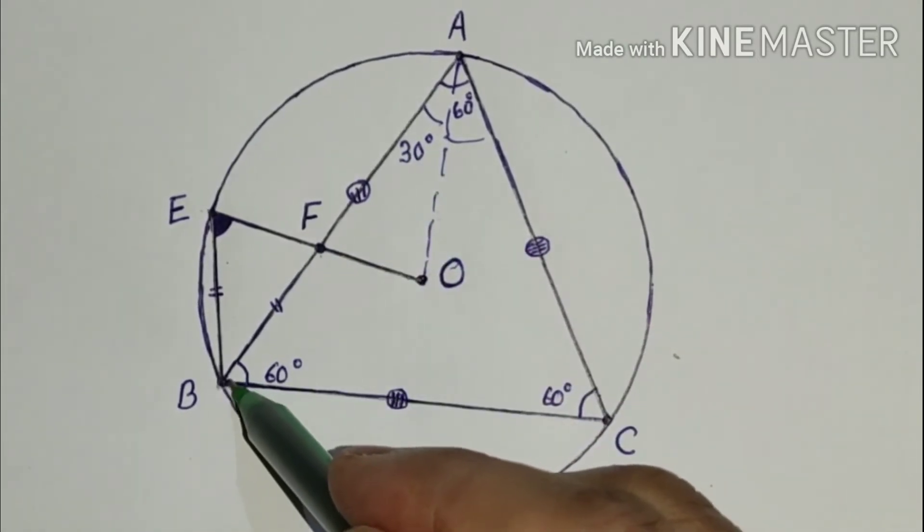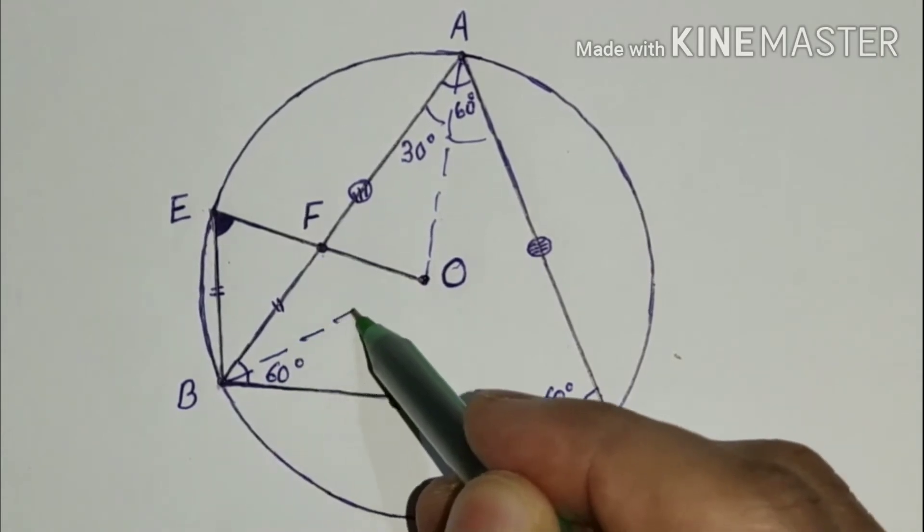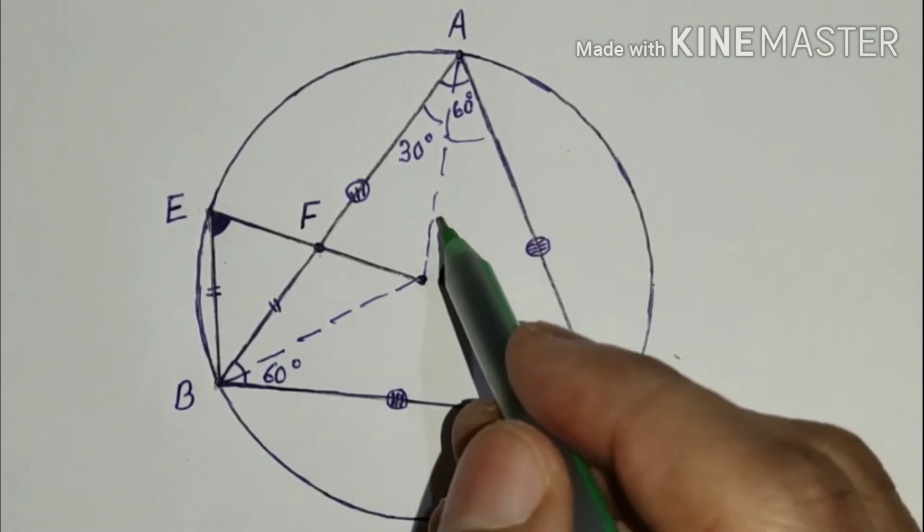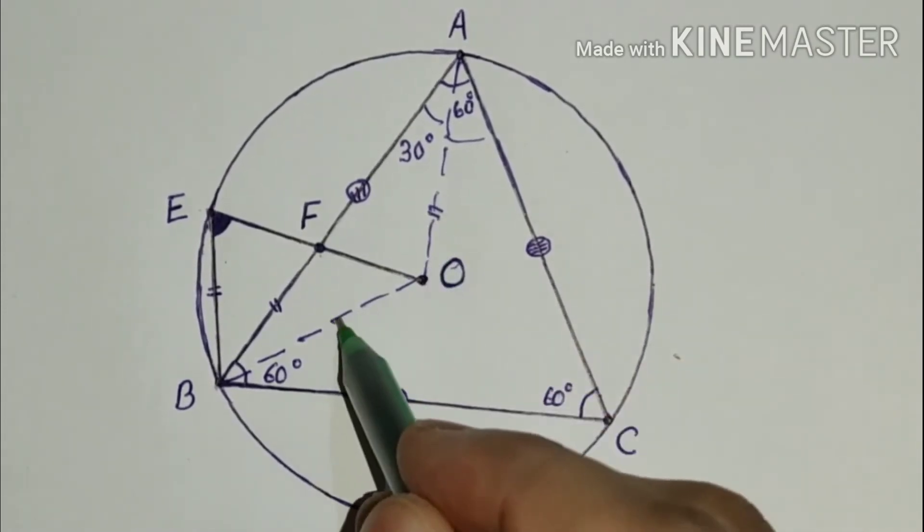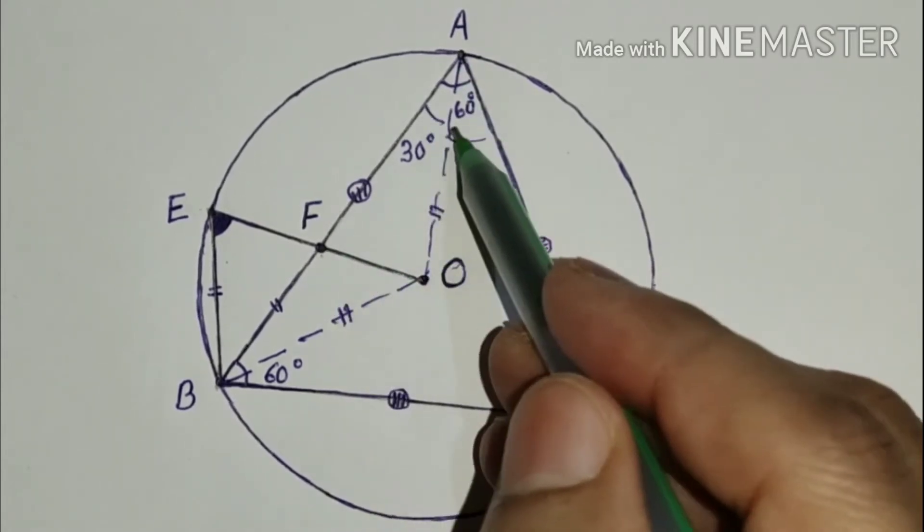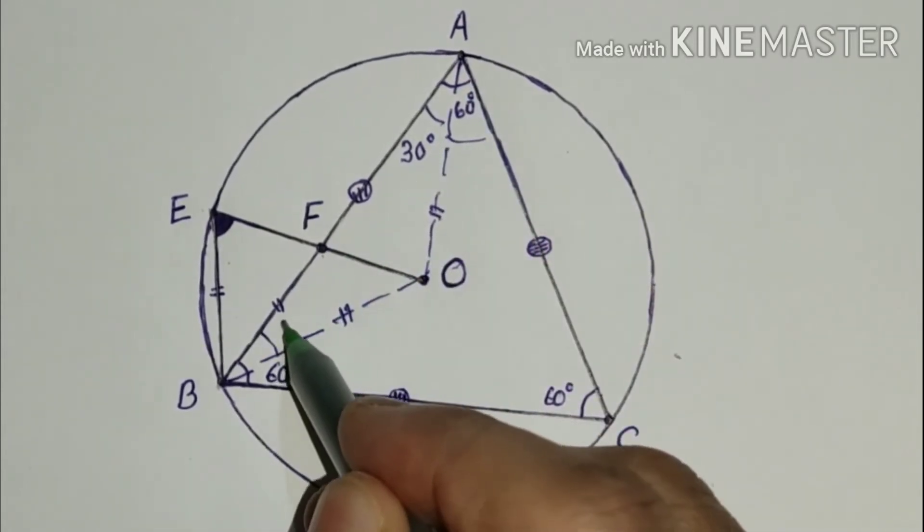Join BO. Since OB and OA are radii of the circle, these two will be equal. Angle OAF is 30 degrees, so this angle will also be 30 degrees.